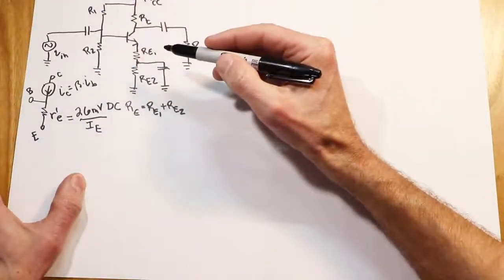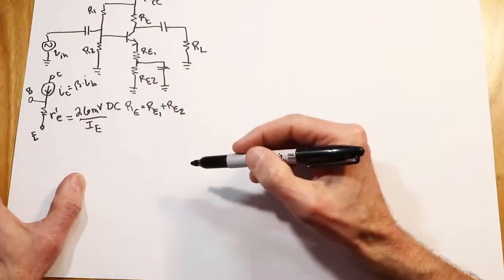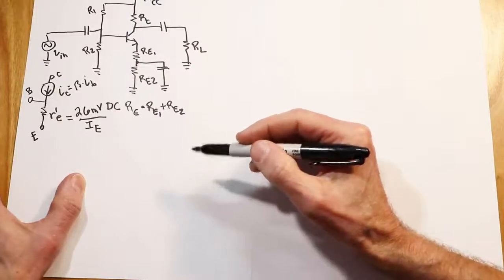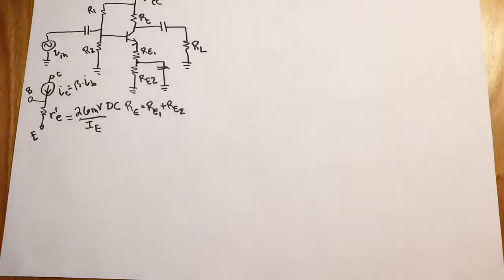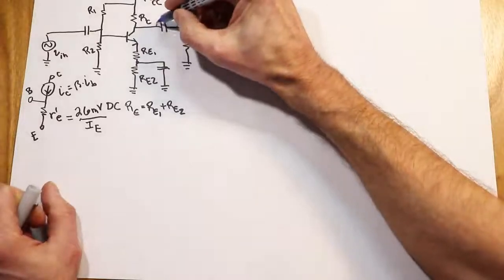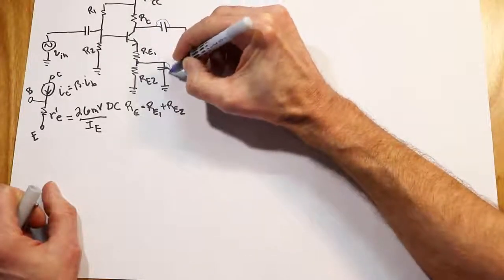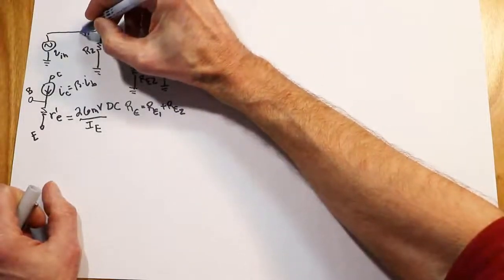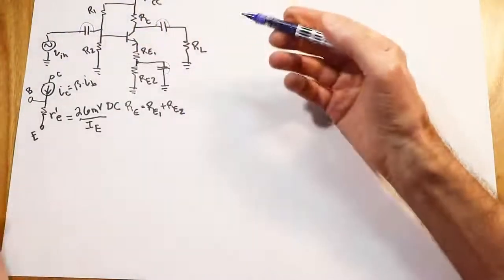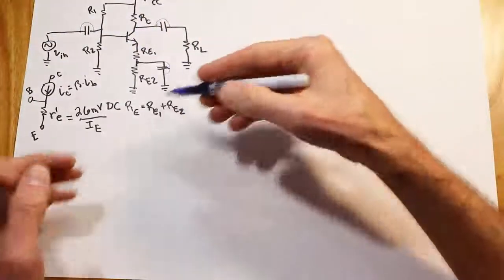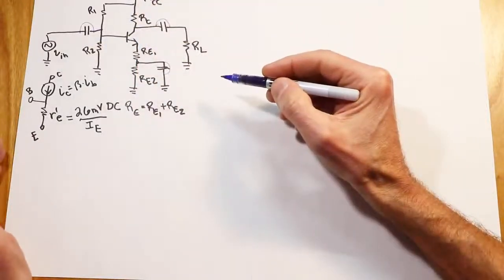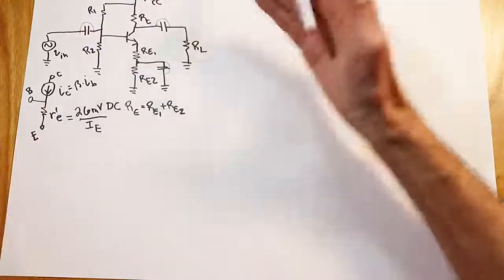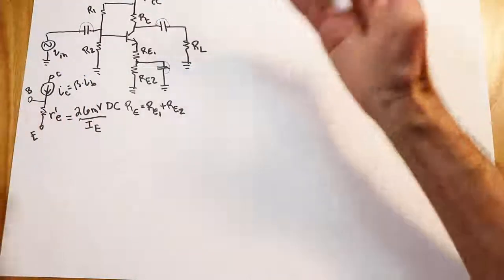Having done our DC analysis and obtained R'e, what we would like to do is turn over to an AC equivalent circuit. For the AC analysis, we are going to short out these capacitors. Their capacitive reactance is going to be small enough that we can just call them shorts — small relative to the surrounding resistor values. We're not saying they're literally zero, but we can approximate them as shorts.